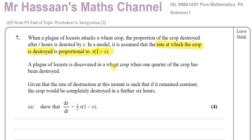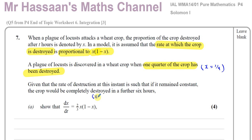A plague of locusts is discovered in a wheat crop when one quarter of the crop has been destroyed, so that's when x equals a quarter. Given that the rate of destruction at this instant is such that if it remained constant, the crop would be completely destroyed in a further 6 hours. Completely destroyed means x equals 1 — the proportion of the crop is 100% — in a further 6 hours.